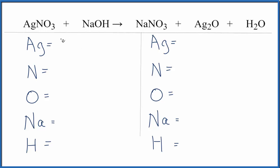Let's count the atoms up. We have one silver, one nitrogen, three oxygens, and then we have one more here, plus one, that's four, one sodium, and one hydrogen. On the product side we have two silvers, one nitrogen, oxygens we have three, plus one, plus one. So we have five total oxygens, one sodium, and then two hydrogens.